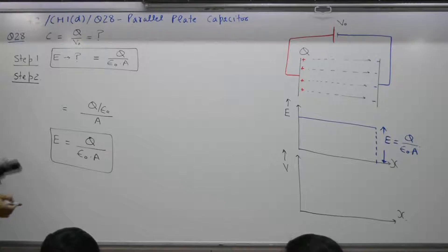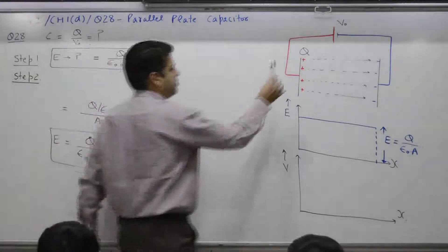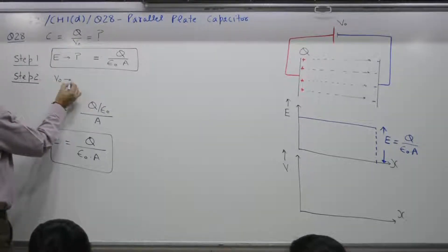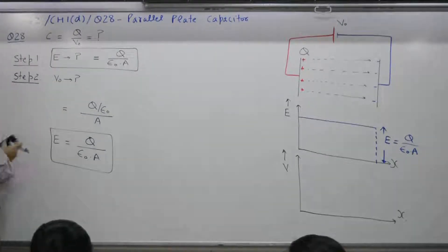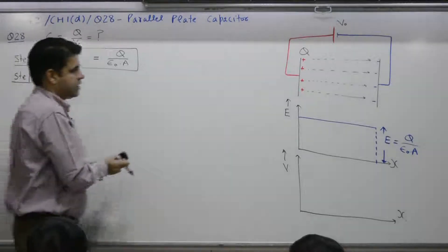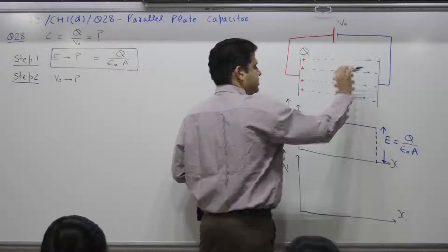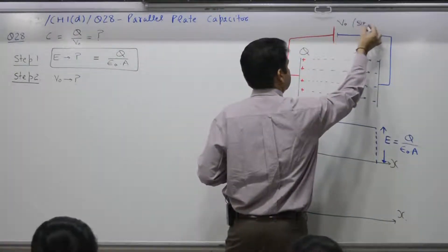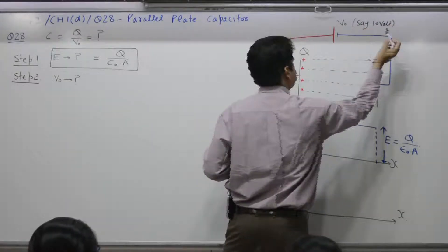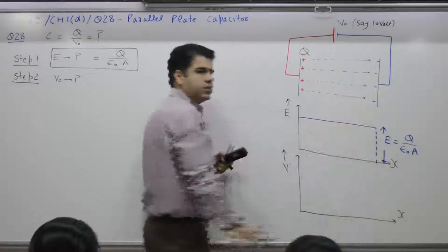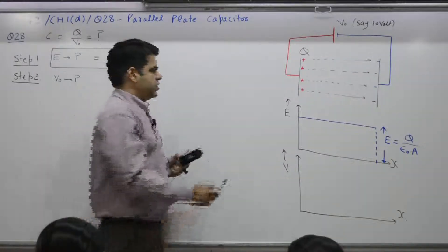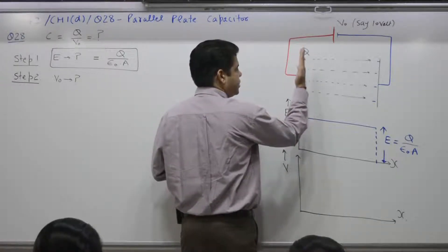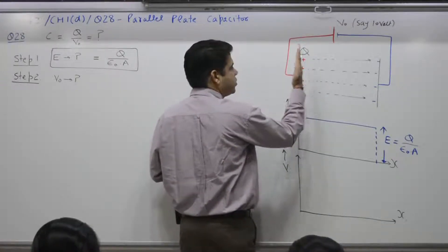Step two: find out the potential difference between the two plates — that is, find V naught. The electric field E is along the x-axis. As an example, say a 10 volt battery is applied here. This plate is at 10 volt and the other is at 0. So all these points on this plate are at the same potential — 10 volt. This is termed an equipotential surface.